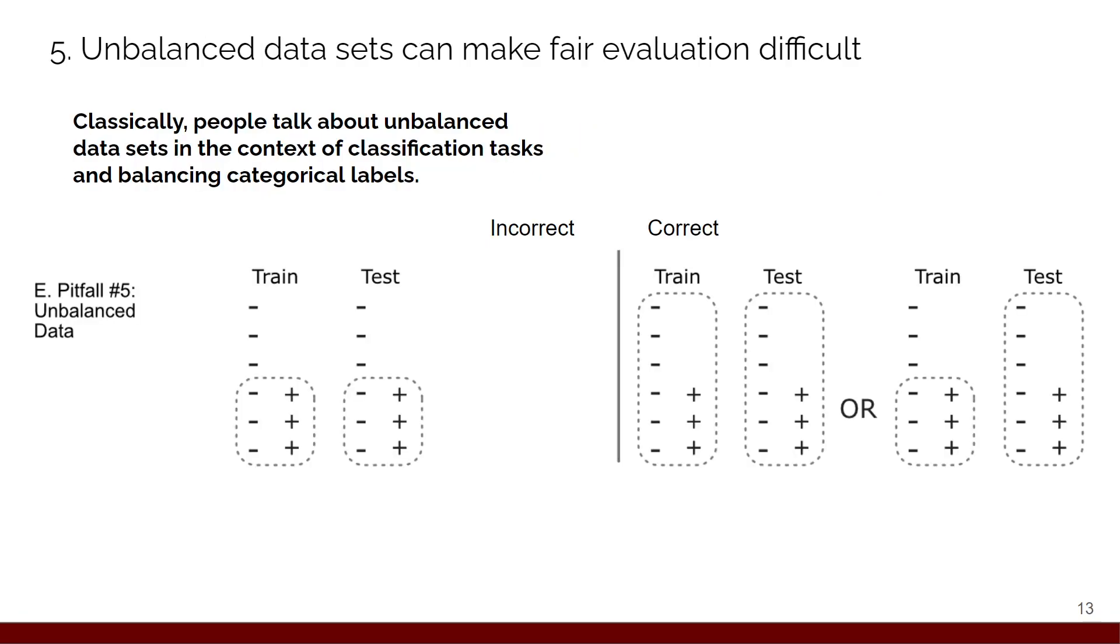So the final pitfall relates to unbalanced data. And kind of classically, people talk about balanced and unbalanced data in terms of classification tasks. You have multiple categories that are your labels, and one of those is more prevalent than the others. The pitfall—sometimes people talk about, you know, instead of using accuracy, you should use area under the ROC or area under the PR curve, which is correct. But that's not the pitfall. The pitfall is that you should make sure that your test set is the same as your prediction set.